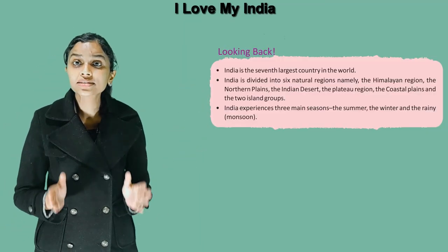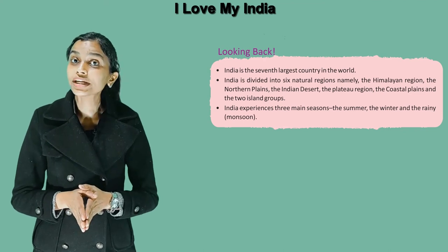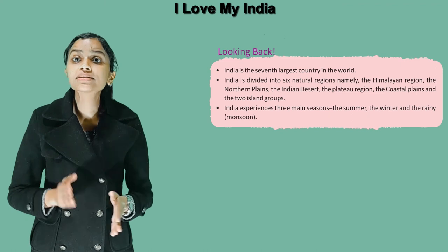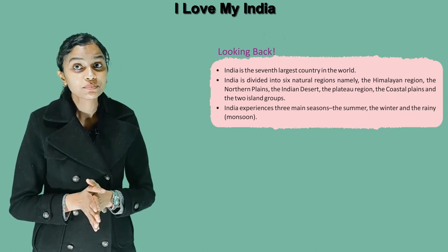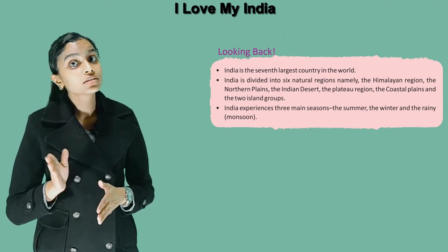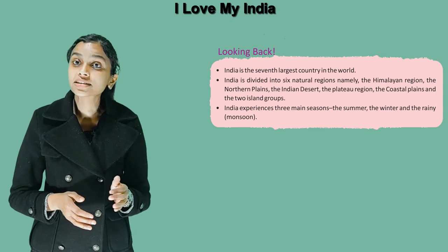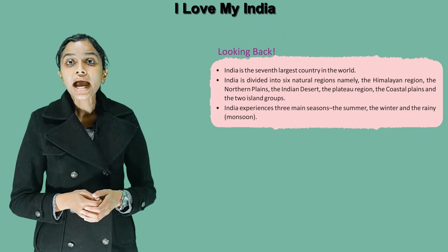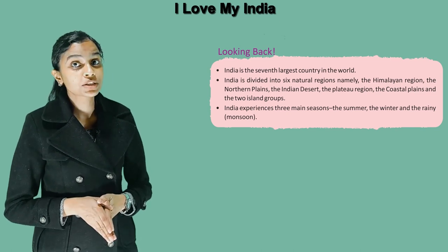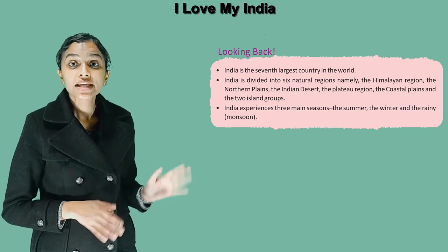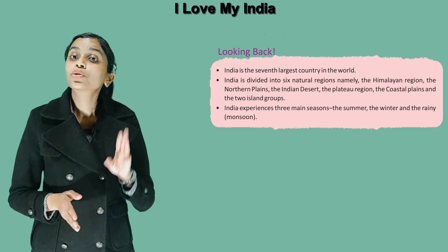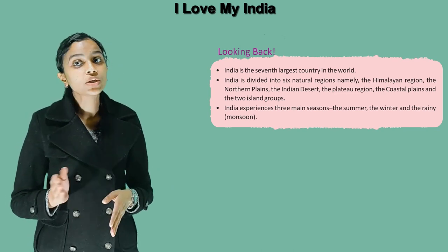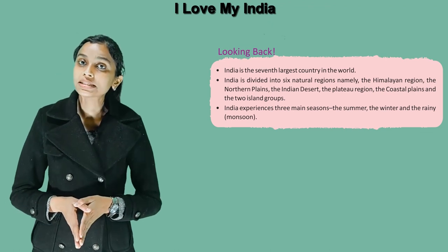Now it's time to look back. India is the 7th largest country in the world. India is divided into 6 natural regions, namely the Himalayan region, the Northern Plains, the Indian Desert, the plateau region, the coastal plains and the two island groups. India experiences 3 main seasons: the summer season, the winter season and the rainy season.